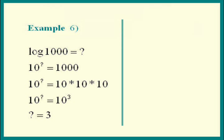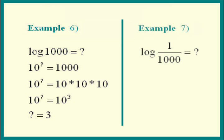Example 7 should look very familiar to the 1 over 81 problem. We have log base 10 of 10 to the negative 3rd power, so the answer is negative 3.